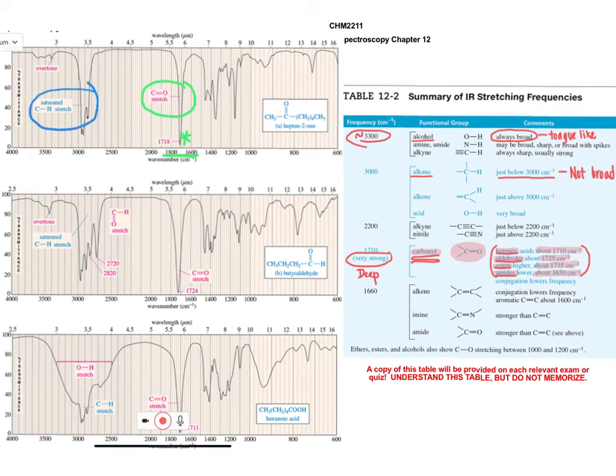The other thing I want to bring to your attention is over here at about 3000, we see our signal for a saturated CH bond. A saturated CH bond or saturated means that it is an alkane. So that corresponds to our alkane signal here, which is generally a signal that is around 3000.